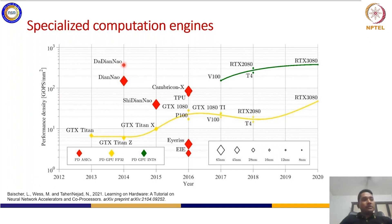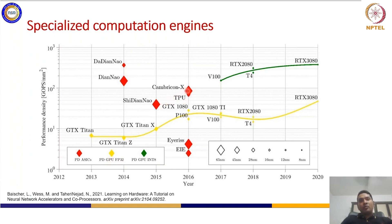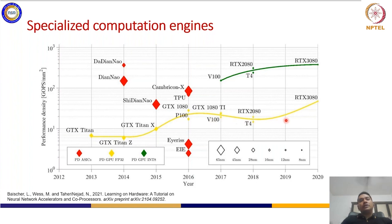Because ASICs are only specialized in running AI benchmarks for a given data type or precision, their performance density — GOPS per millimeter squared — is much higher. GPUs are much more generalized: they can both accelerate AI benchmarks as well as video and graphics processing. The trend for GPU FP32 shown by the yellow line represents almost generalized GPUs available in the market nowadays.